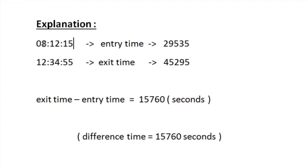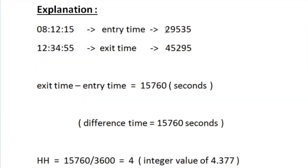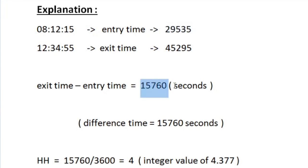So 8 × 3600 + 12 × 60 + 15 equals 29535. Similarly, we do the same for the exit time. The employee entered at one time in seconds format and exited at another. The difference between these two values is 15760 seconds, which means the employee stayed in the office for 15760 seconds.